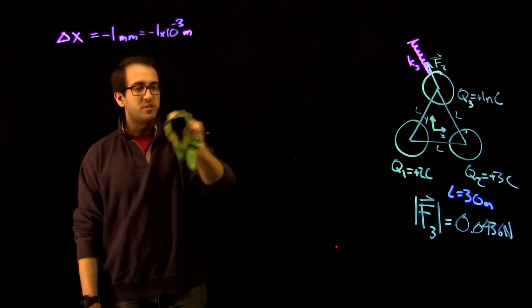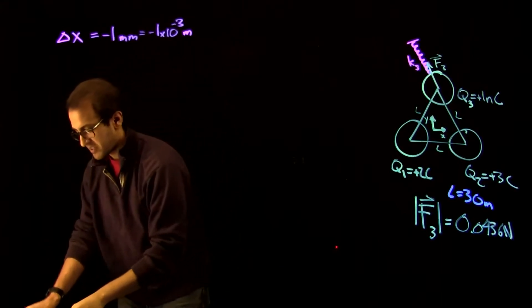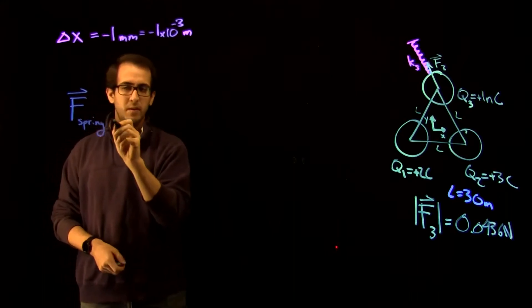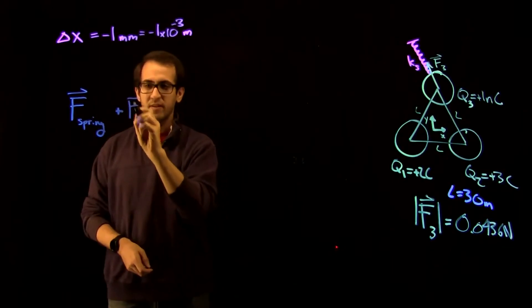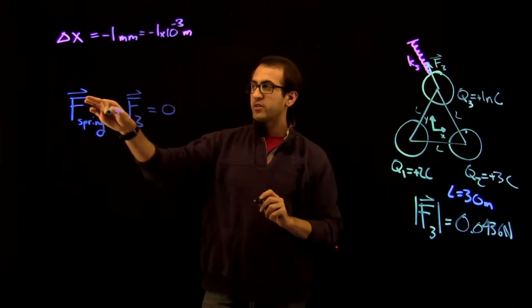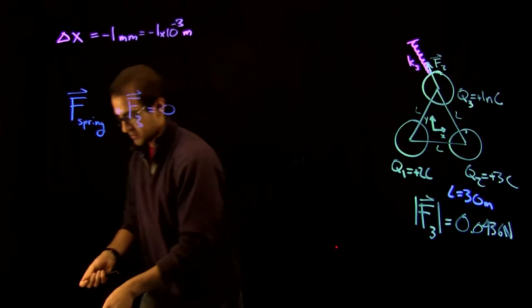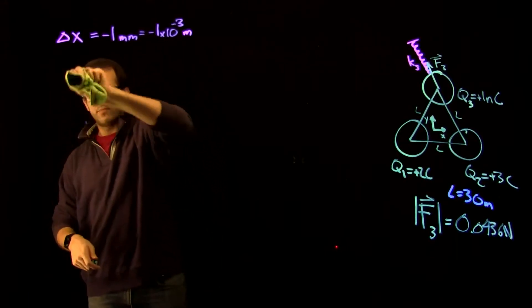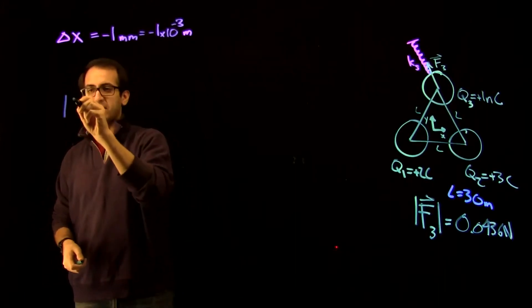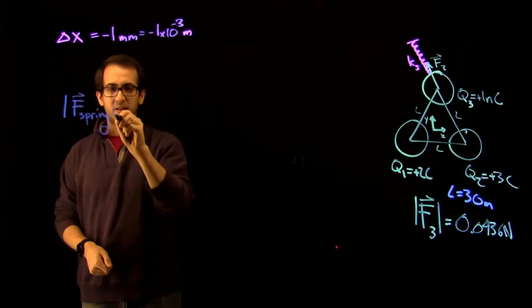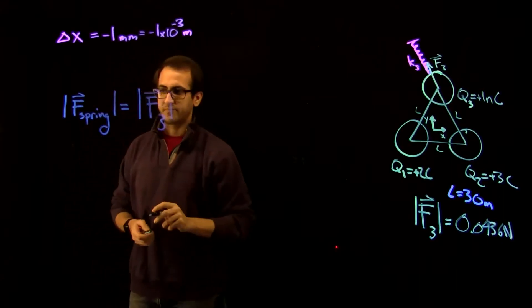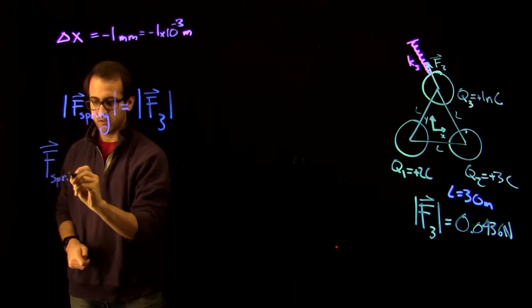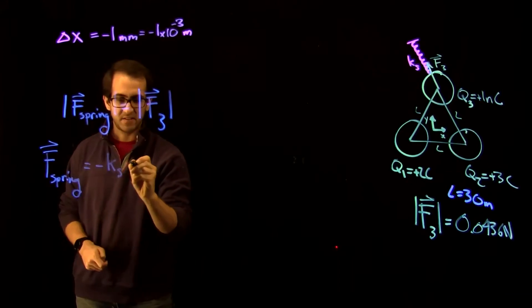So now what we're doing is because we know that the force from the spring directly opposes the force from Q1 and Q2, we can set up a force balancing equation that just says F spring plus F3 equals zero. Notice these are both vectors, so they have directions, and the directions oppose each other. So that means that if they oppose each other, we're going to get a relative minus sign between them. But it means that their magnitudes are equal because they exactly balance out. So let's rewrite that as magnitude of F spring is equal to the magnitude of F3. Well, let's think back to physics 101 now.